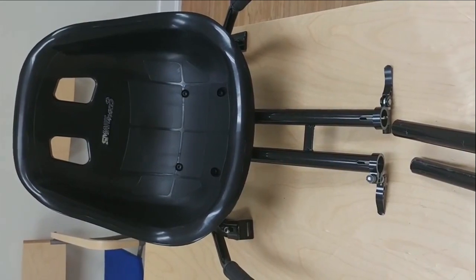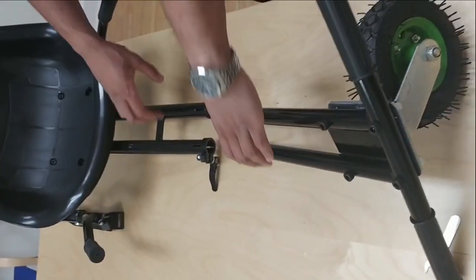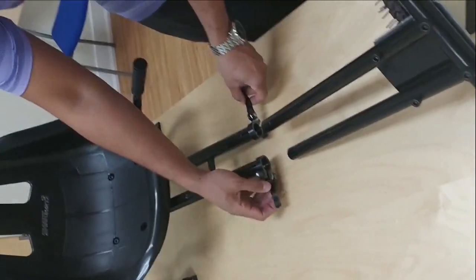Here is your assembled seat. And now what we are going to do is apply the front end of the frame to the back end of the frame.